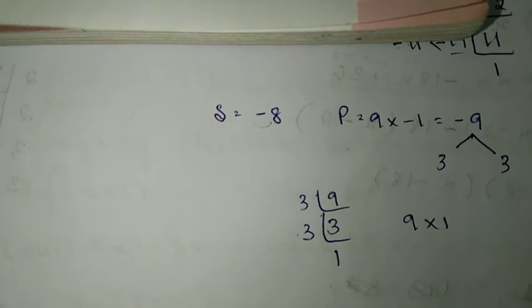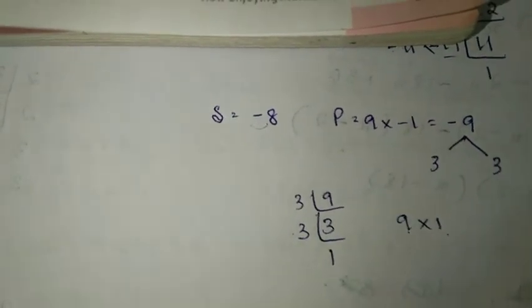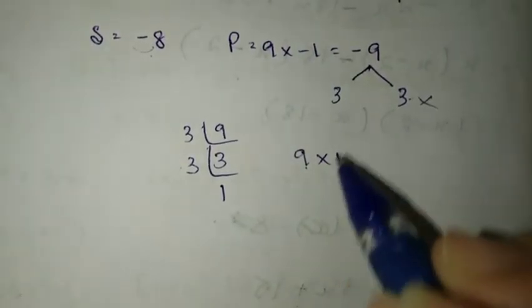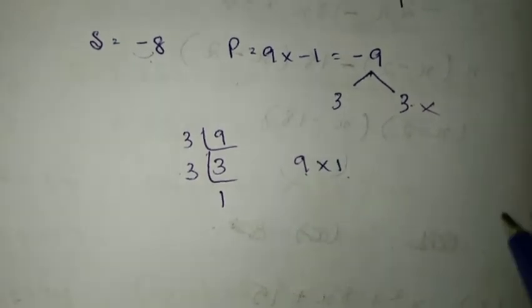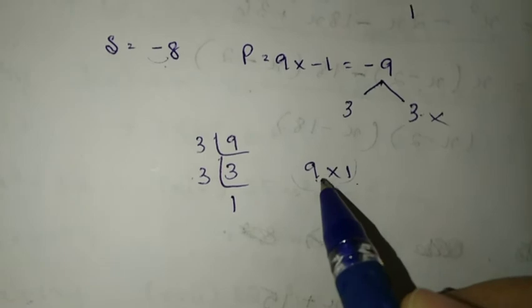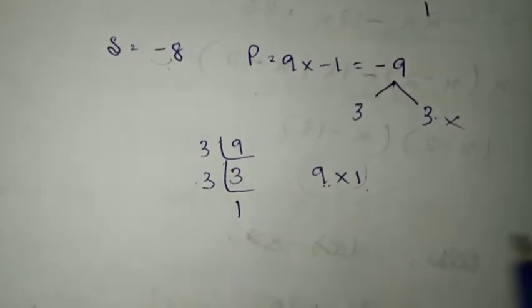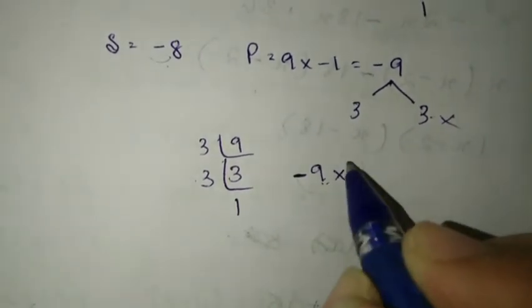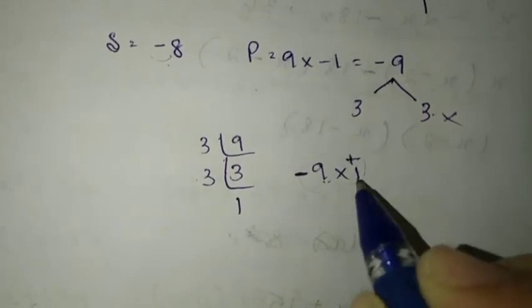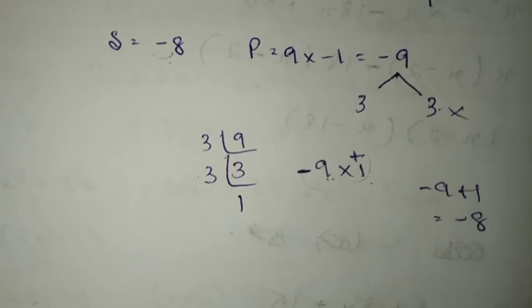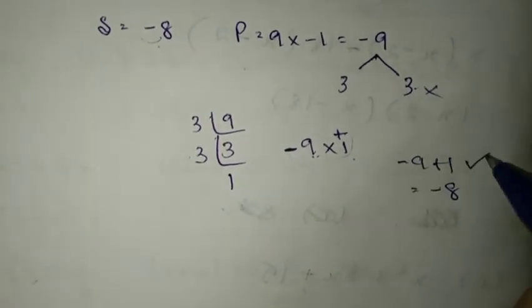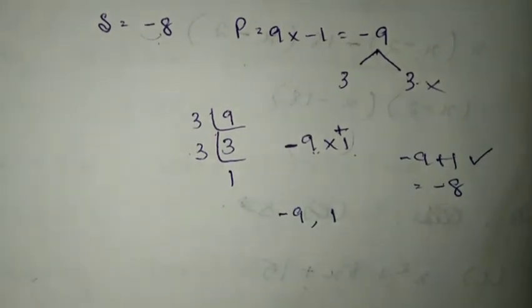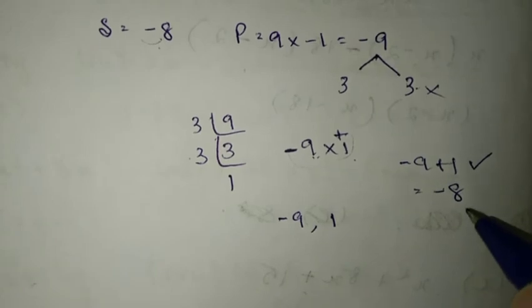9 into 1 is 8, but we need minus 8. If we subtract, both signs should be negative. Minus 8 and minus 9: minus 9 plus 1 equals minus 8, and minus 9 times 1 equals minus 9. So the two numbers are minus 9 and 1.